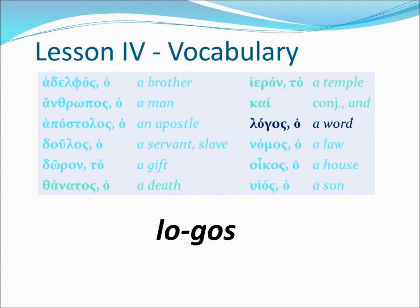Our next vocabulary word is logos. Logos means 'a word.' The article ho shows it's a masculine noun. So logos would be 'a word,' and ho logos would be 'the word.'